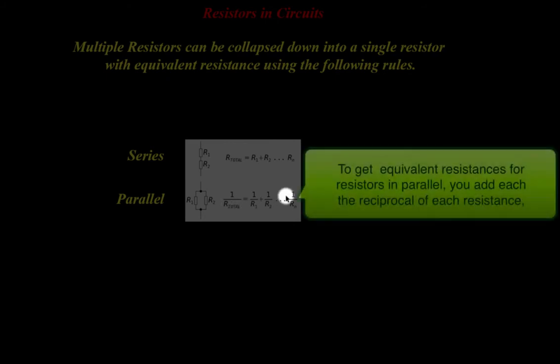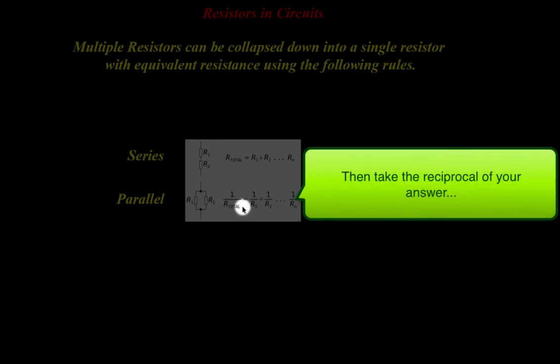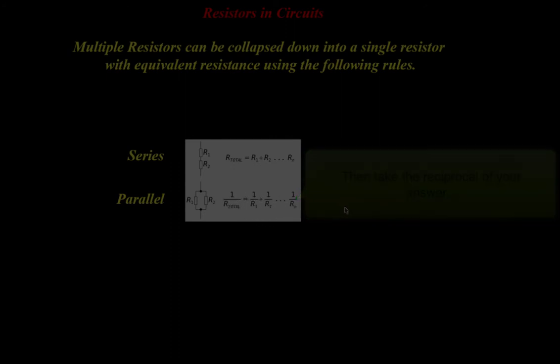The way to get the equivalent resistance is you do one over the resistance plus one over the resistance for however many resistors you have in parallel. Then after you combine them with a common denominator, you flip both sides to get the equivalent resistance.